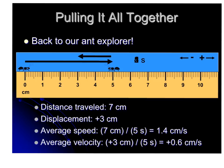If we go back to our Ant Explorer, then the distance was 7 centimeters, but the displacement was a positive 3 centimeters. So if we look at the average speed, it would be 7 centimeters divided by 5 seconds equals 1.4 centimeters per second. If I'm looking at the velocity, the average velocity, notice I have that positive for my direction. Positive 3 centimeters divided by 5 seconds gives me a positive 0.6 centimeters per second.